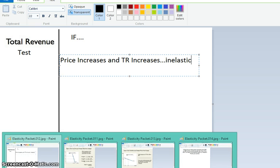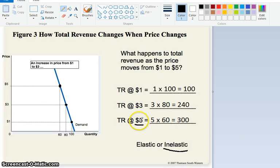And if you wanted to look at it in the reverse way, you could too. So if we went from $5 to $1, the price went down, but what happened to your total revenue? It went down too.